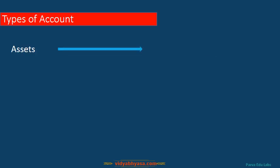The first type is asset. An asset is something which is valuable, that an entity owns and can be expressed in monetary value. Simply, an asset is something which has a life of more than one year. Examples include machinery purchased by a factory, vehicles like cars or bikes for office use, and computers or laptops purchased for business use. The expenses which have a life of more than one year are termed as assets.